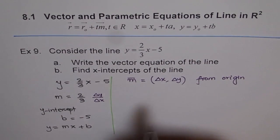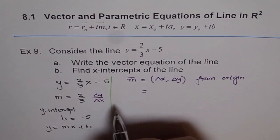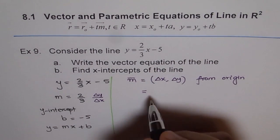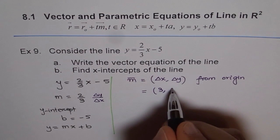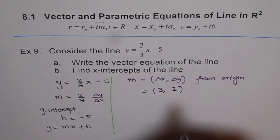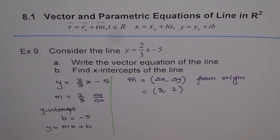So, for this equation, m is equal to 3 over 2. That is how, if you have equation in slope-intercept form, you can straight away write the direction vector, 3 over 2.